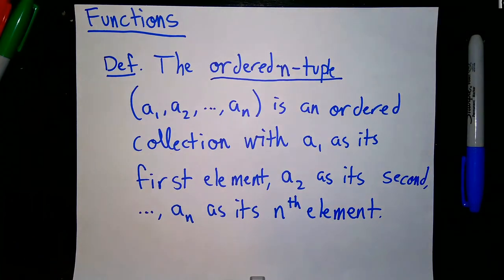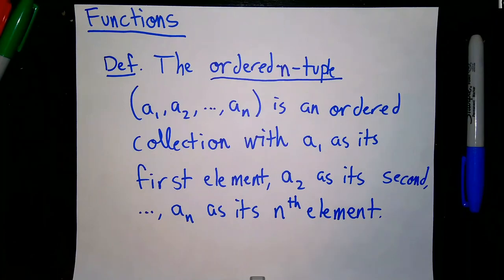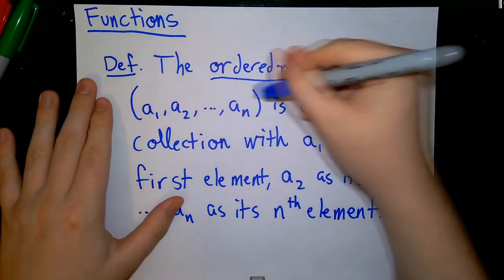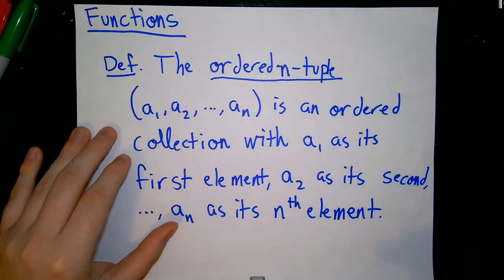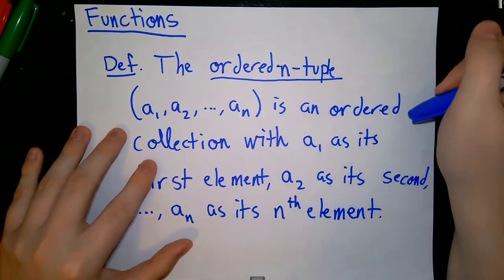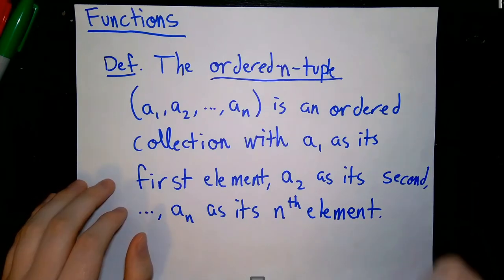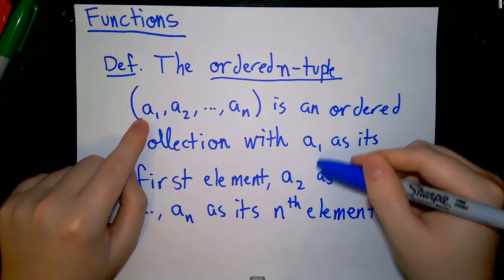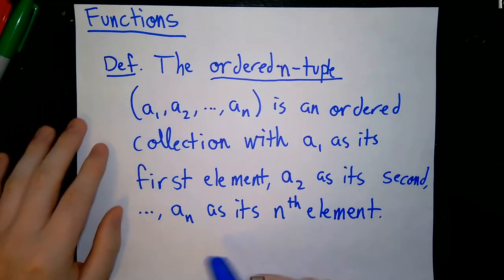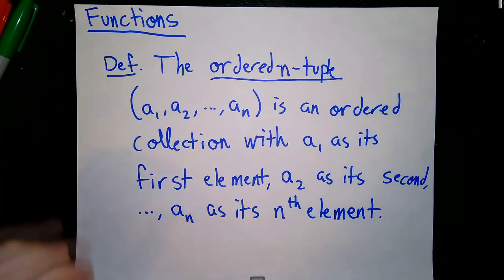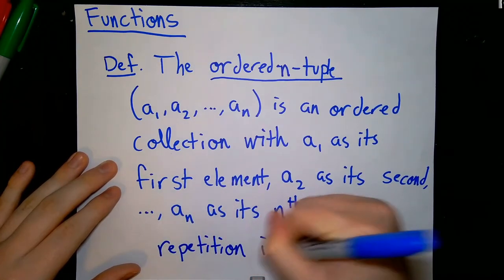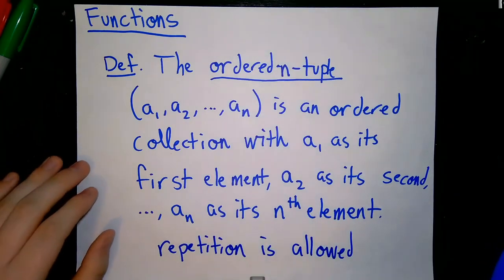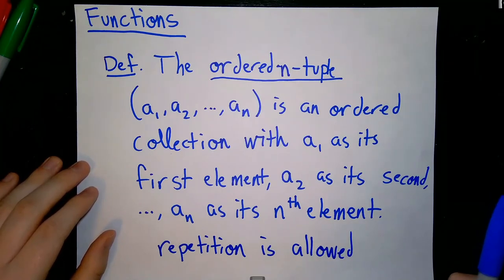The first thing we need to talk about when discussing functions is something called the ordered n-tuple. This is another discrete structure — you can think of it as sort of a set that is ordered. We describe an ordered n-tuple using parentheses instead of curly braces. The elements of that ordered n-tuple could be whatever mathematical object we want, just like a set. But in this case, it's an ordered collection, so the order does in fact matter. Repetition is also allowed, whereas it wasn't with a set.